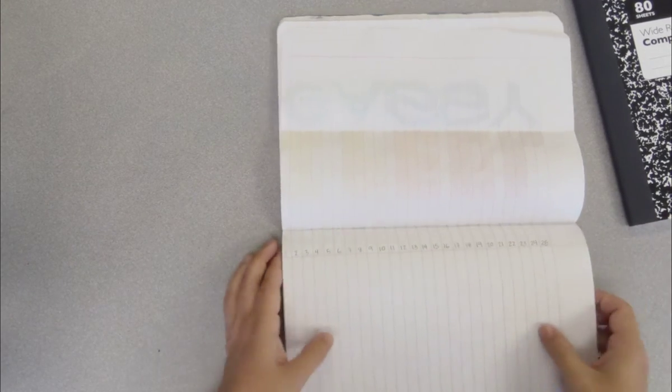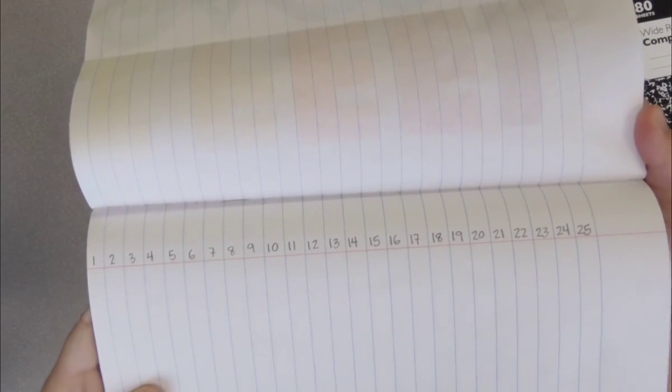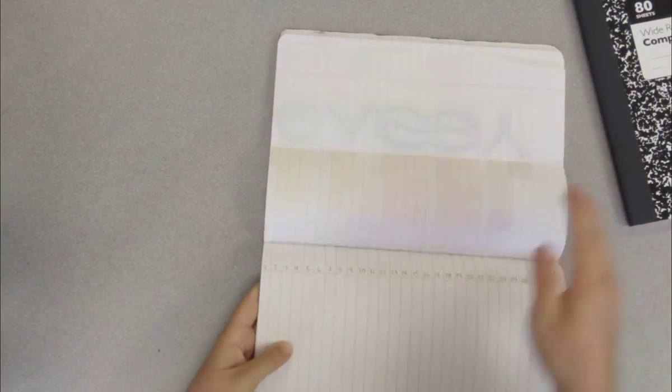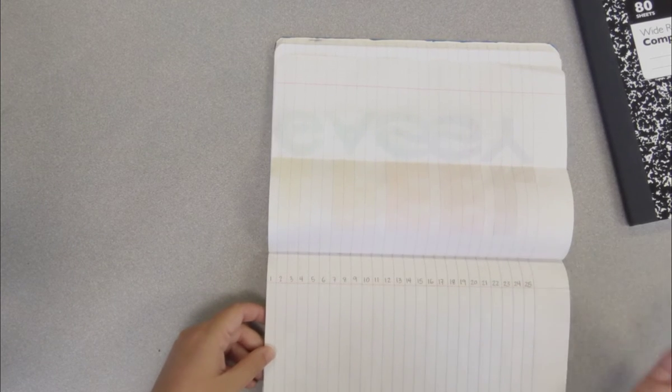So it just so happens that in these composition books there are exactly 25 lines on a page. If you have more than that on a piece of paper that you're using, just stop at 25. That's as far as you're gonna go.